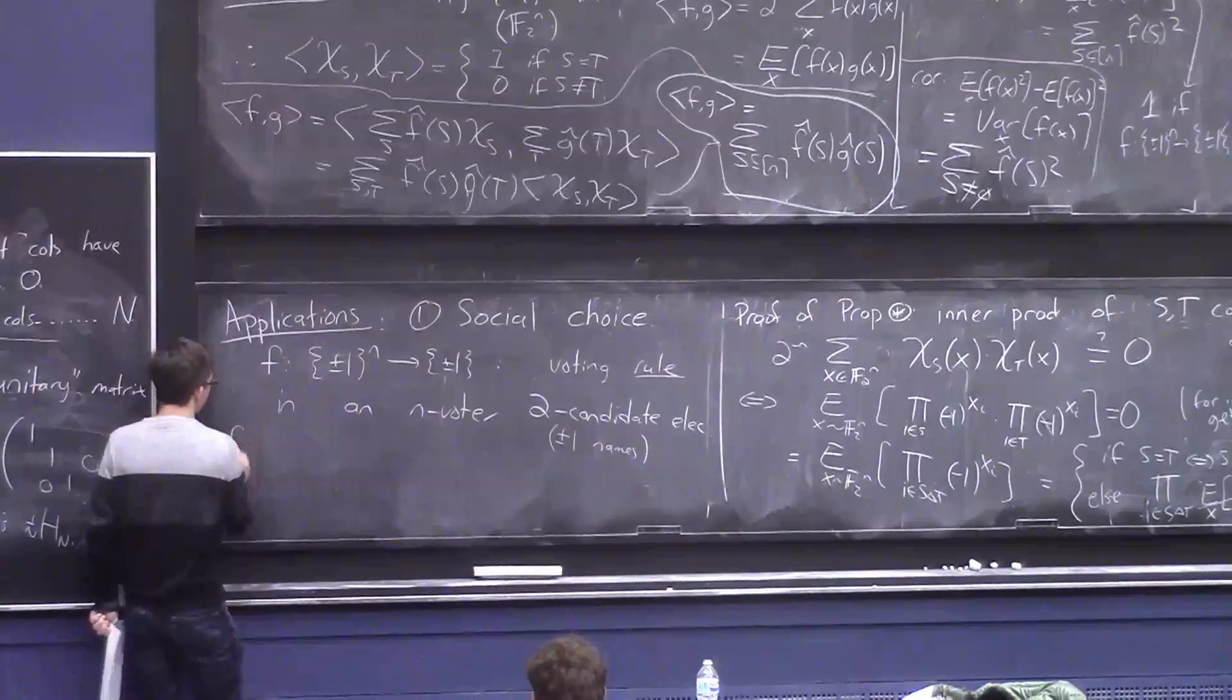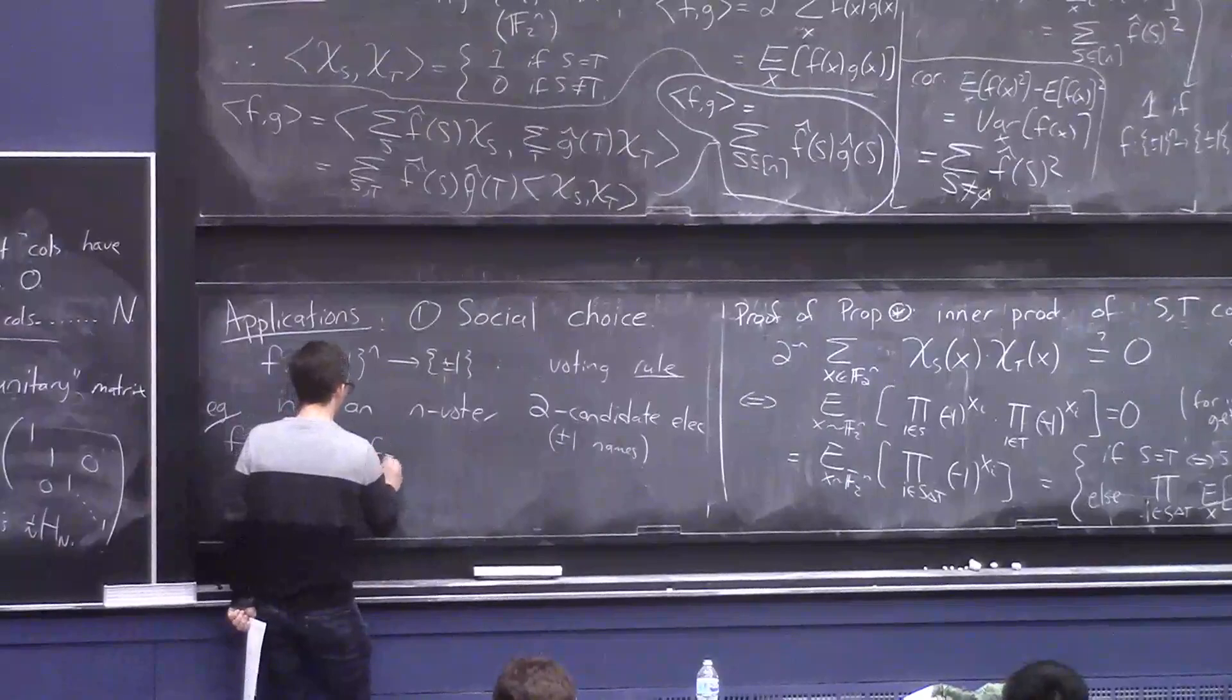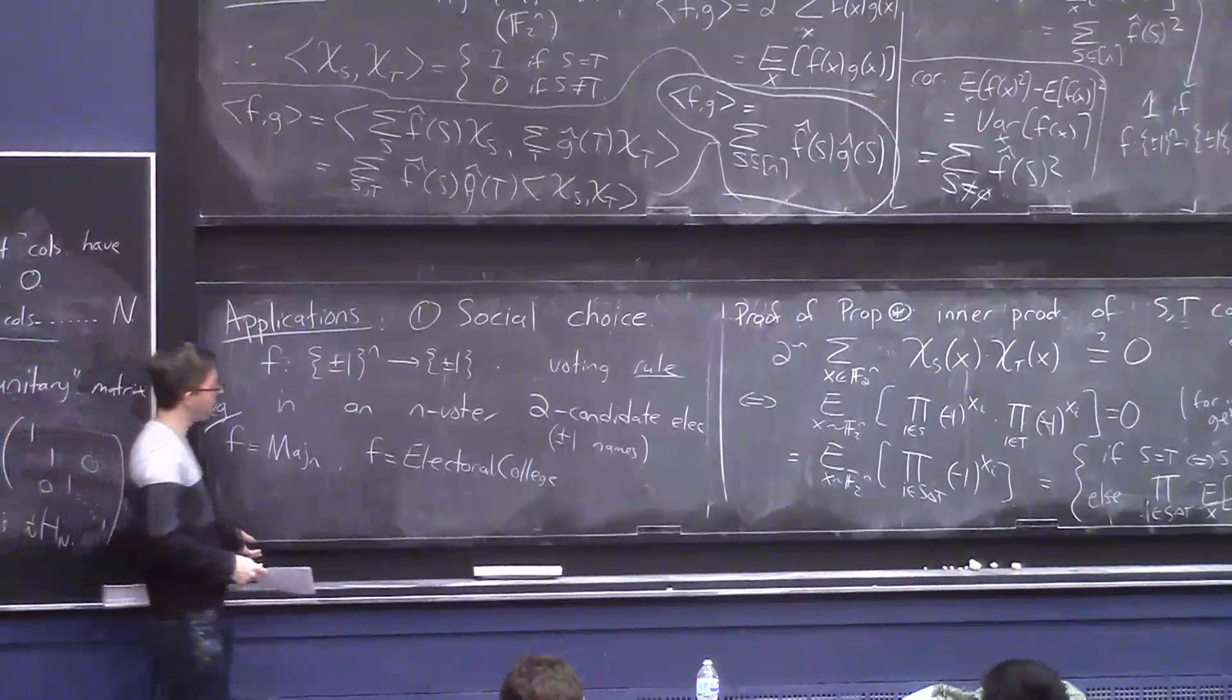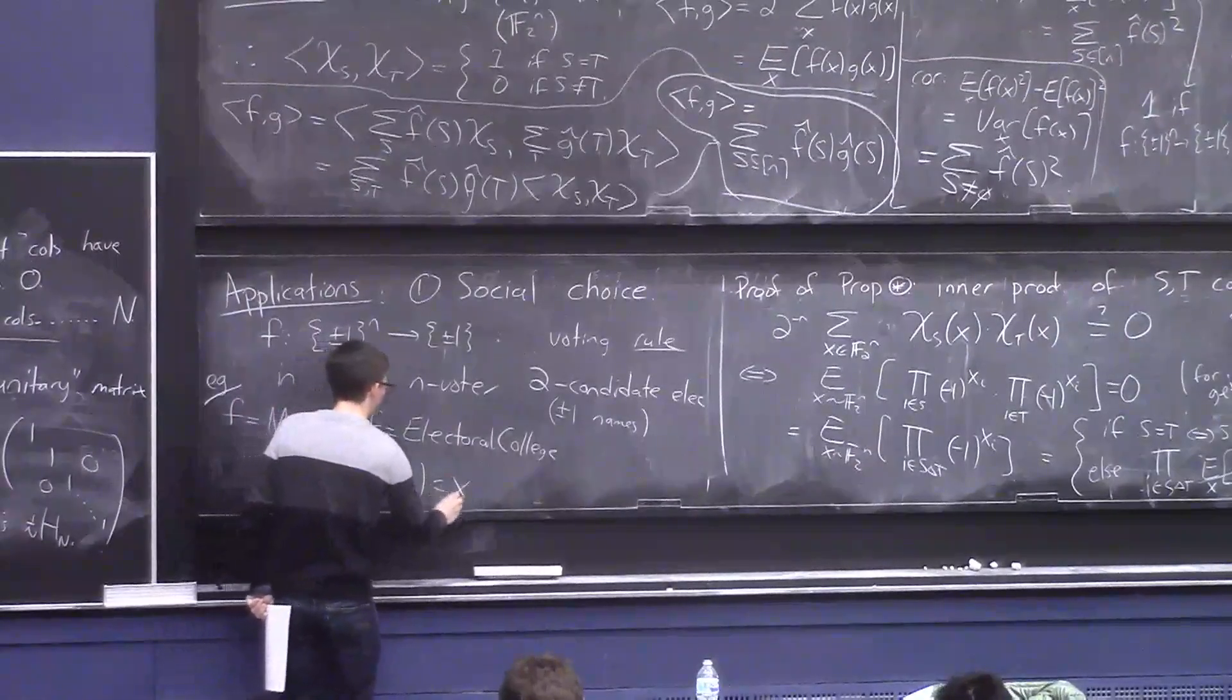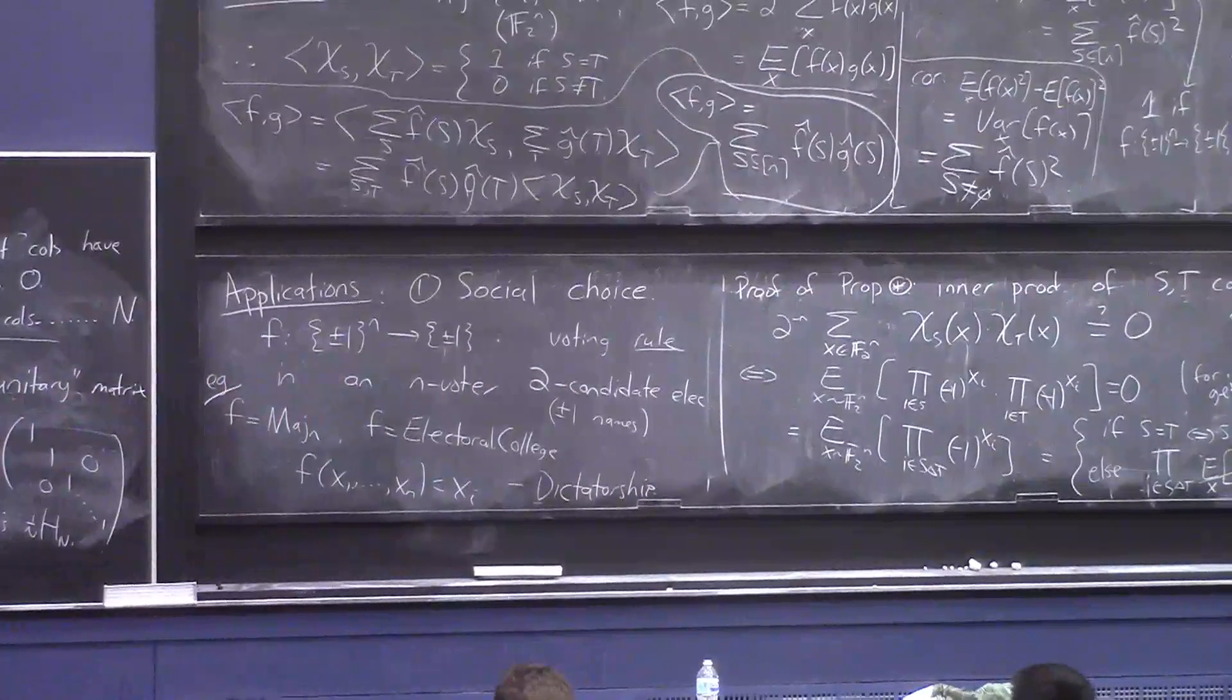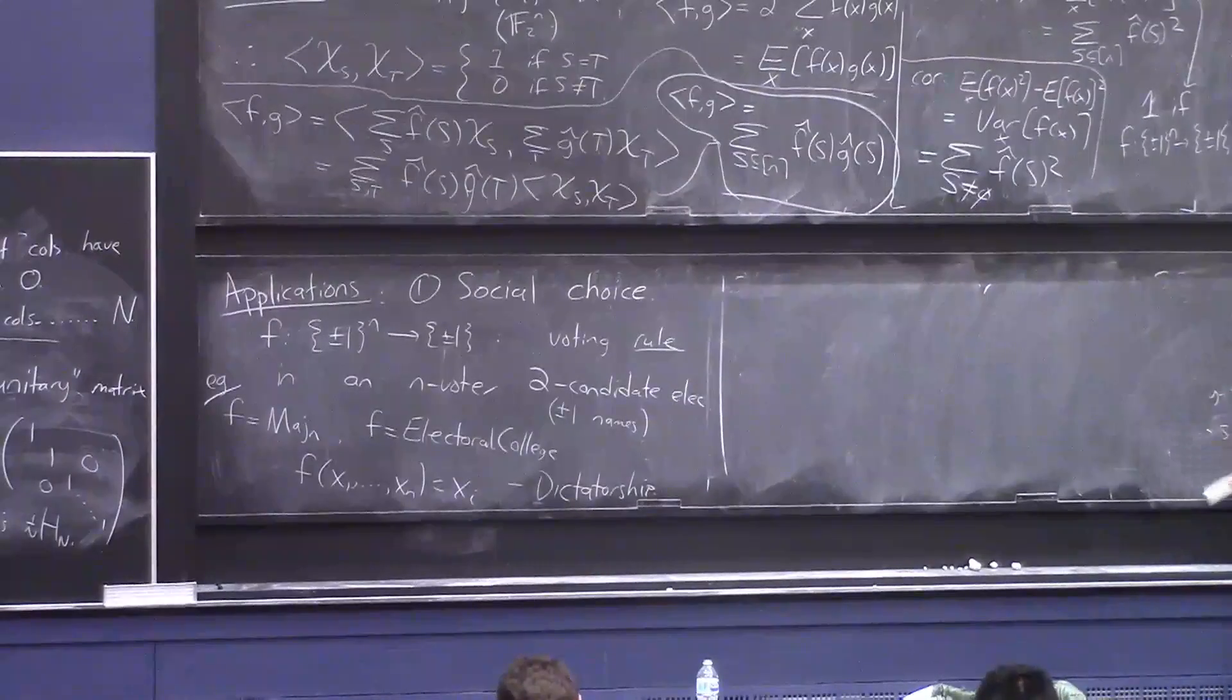A popular and democratic choice is the majority function. That's not the only one used in practice. To elect a president in America, they use some electoral college thing, which is like a two-level weighted majority of the votes, like a two-layer neural network applied to the votes. In some other countries, they use an election scheme F of x1 through xn equals xi. Let's call it a dictatorship, because only one person's vote makes a difference.